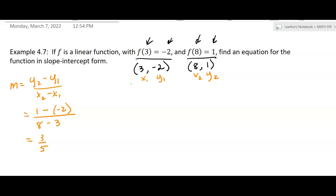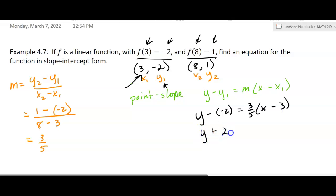And now I want to use the point-slope formula. Point-slope formula says y minus y sub 1 equals m times x minus x sub 1. All right, so we're going to plug everything in, and we're going to have y minus, our y sub 1 is negative 2. Our slope is 3 fifths. Our x sub 1 is 3. And so we're going to have y plus 2 equals, and I'm going to distribute that slope, 3 fifths x minus 9 fifths.